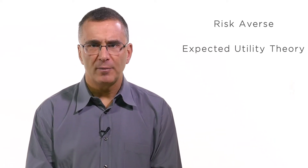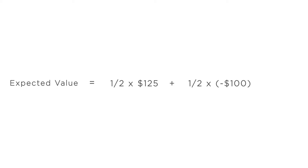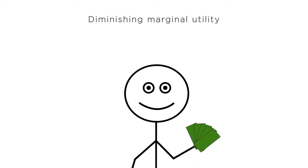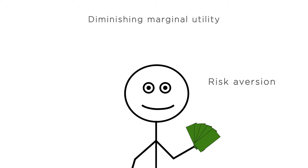To account for this, economists often model uncertainty using expected utility theory. Expected utility is like the expected value we computed earlier, but instead of taking a probability-weighted average of the dollars you'd win or lose in each outcome, we take a probability-weighted average of your utility in each outcome. Why is using utility different than just using dollars? Because of the diminishing marginal utility of dollars. Diminishing marginal utility means that the next dollar is worth less to you than the last. As a result, losing $1 makes you sadder than winning $1 makes you happy, and the result is risk-aversion. You won't take some gambles that are more than fair because the joy from winning is smaller than the pain from losing.